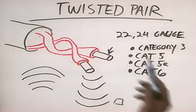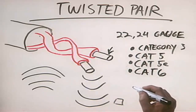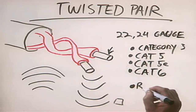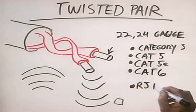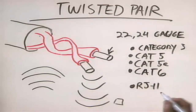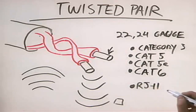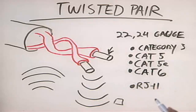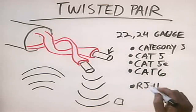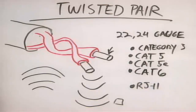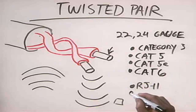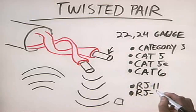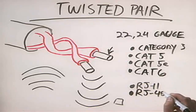When dealing with twisted pair connectors, there are two different types. There's the RJ11 connector, which is the type used for your telephone line — if you've ever plugged a telephone into a wall jack, you used an RJ11 plug. For networking connections, however, we use what's called the RJ45 connector.